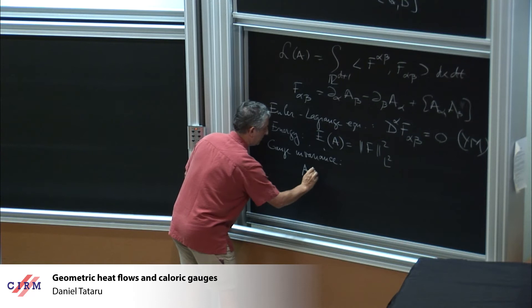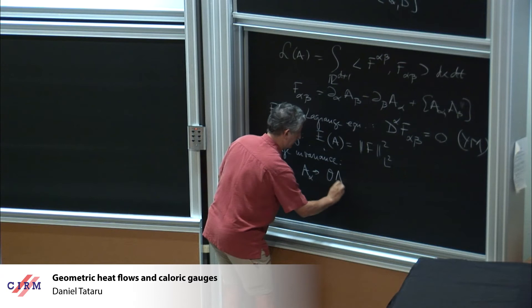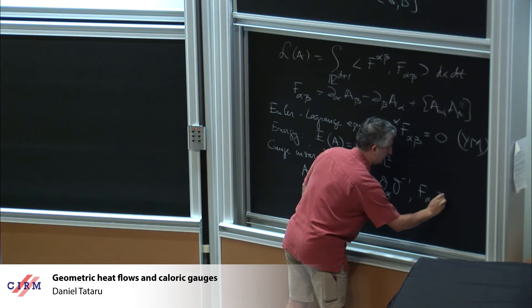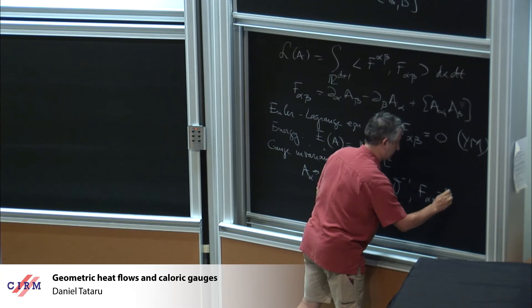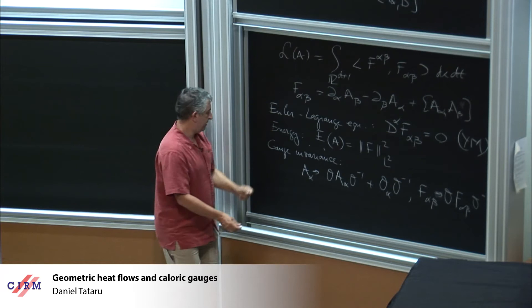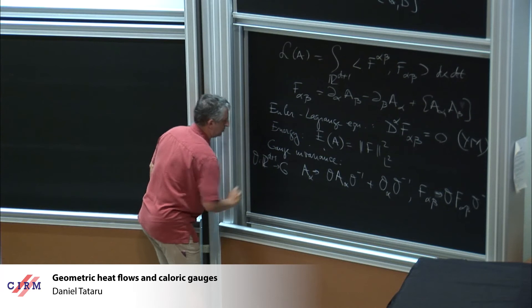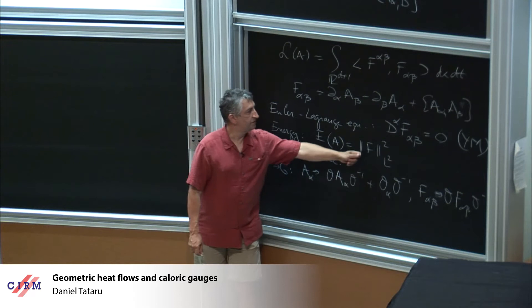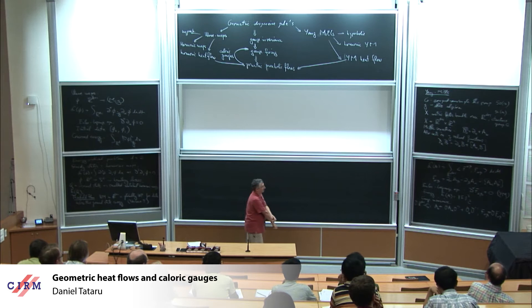The gauge invariance takes A_alpha to O A_alpha O^{-1} + ∂_alpha O · O^{-1}, and F_{alpha beta} goes to O F_{alpha beta} O^{-1}, where O stands for maps valued in the Lie group — so O is from R^{d+1} into your Lie group. This transformation preserves the Euler-Lagrange equation, the Yang-Mills equation, and preserves the energy. This is the gauge invariance that I have in mind.